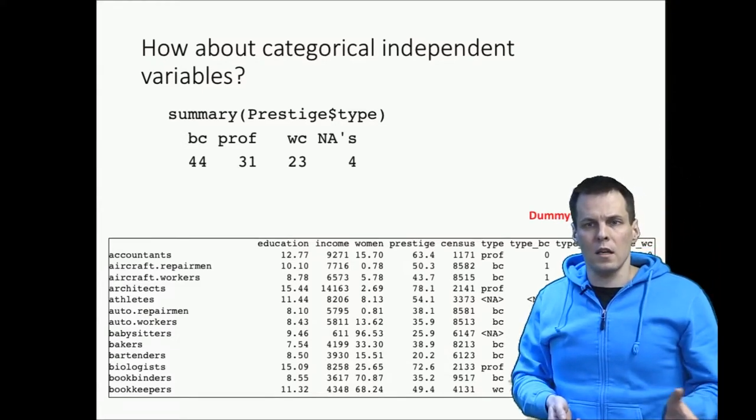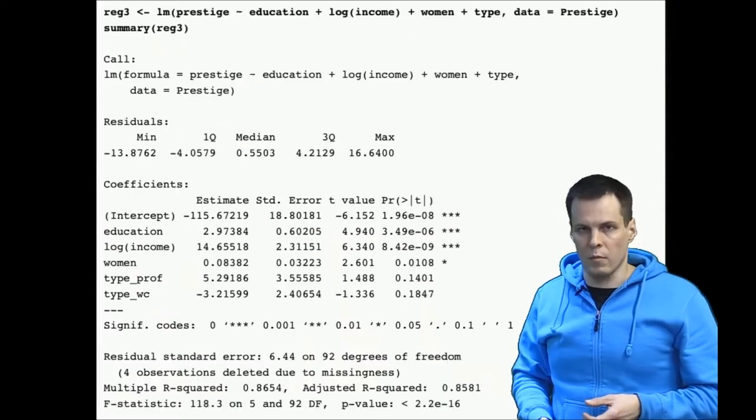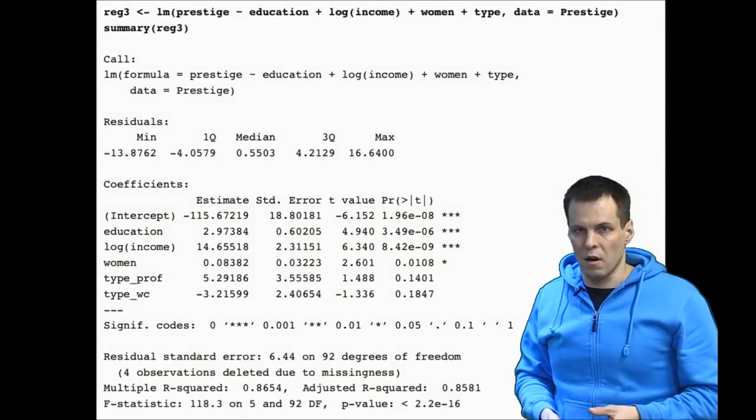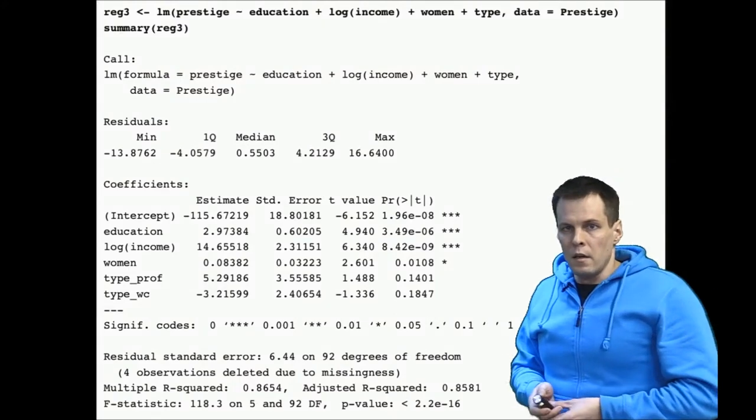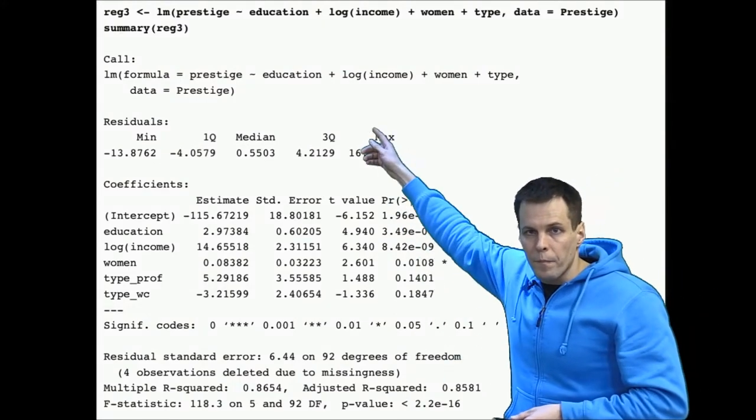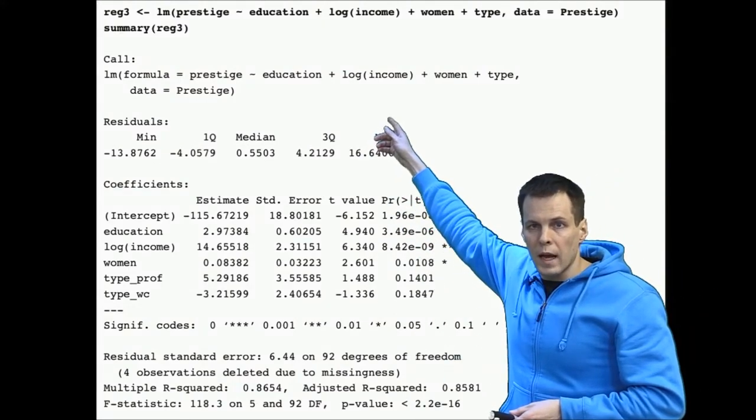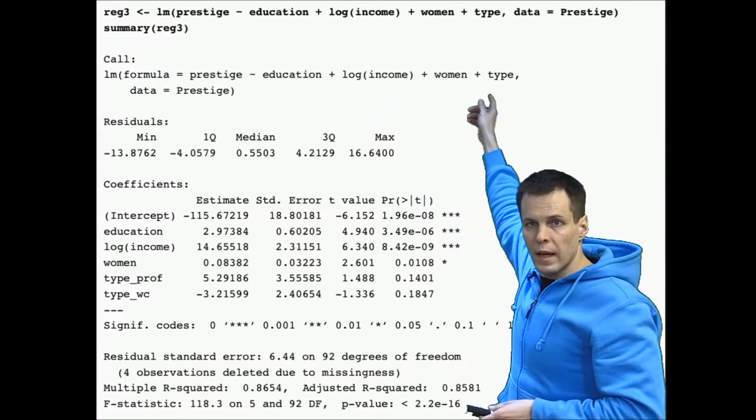Let's take a look at the regression results. When you add a categorical variable in a regression analysis in R and Stata, we have the categorical variable here.